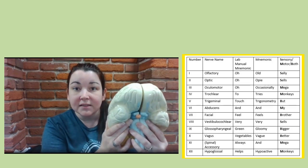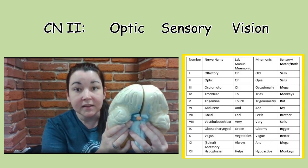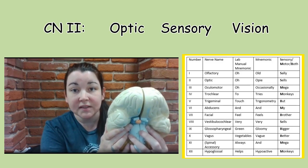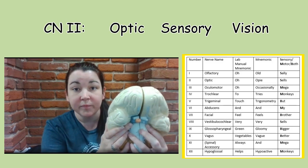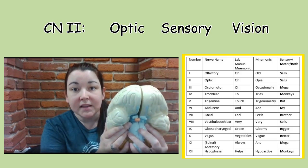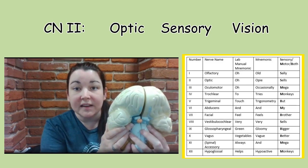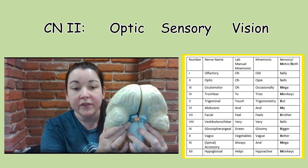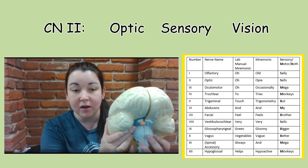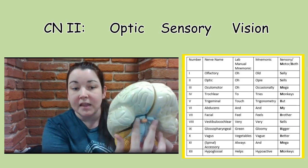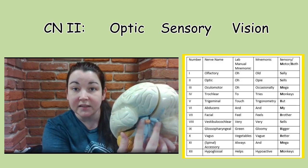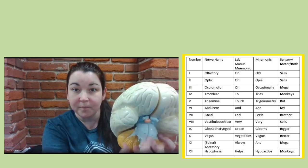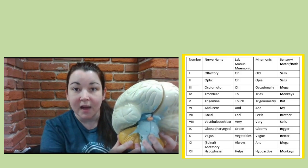Looking at cranial nerve number two, you have the optic nerve. Optic is sensory as well — both cranial nerves one and two are sensory. Optic obviously deals with sight. When you look for the optic nerve on your brain model, you'll find it near the pituitary gland. The pituitary gland is here, and these are the optic tracts that form there — those are your optic nerves.